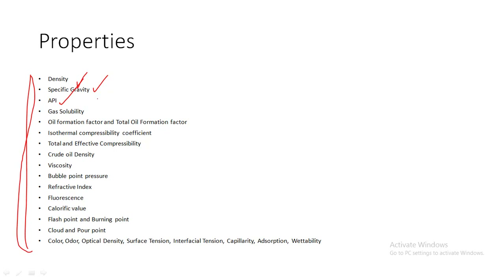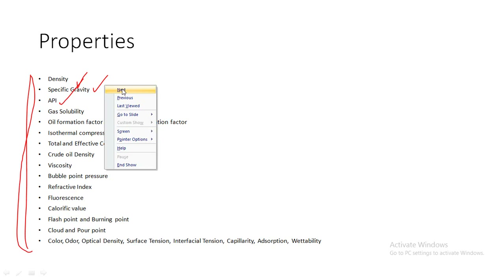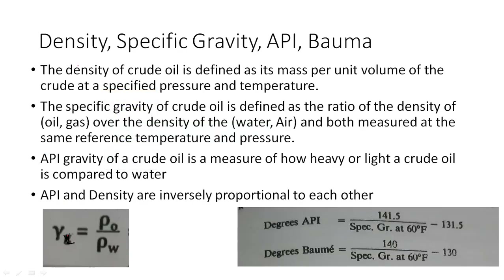Let us see density first. The definition of density is: the density of crude oil is defined as its mass per unit volume at a specified pressure and temperature.